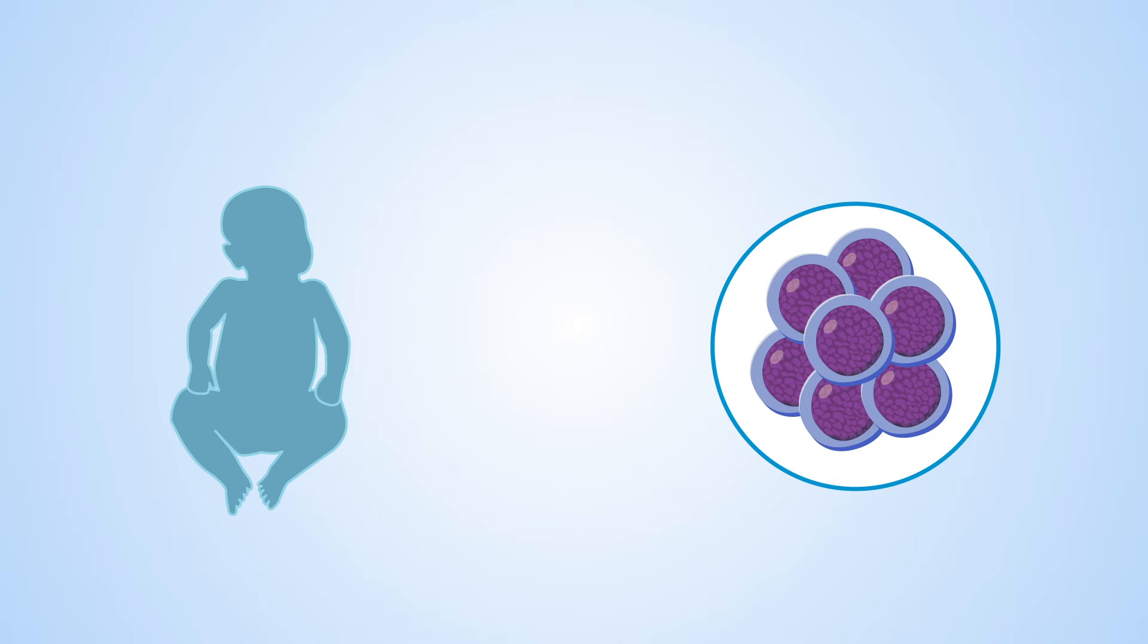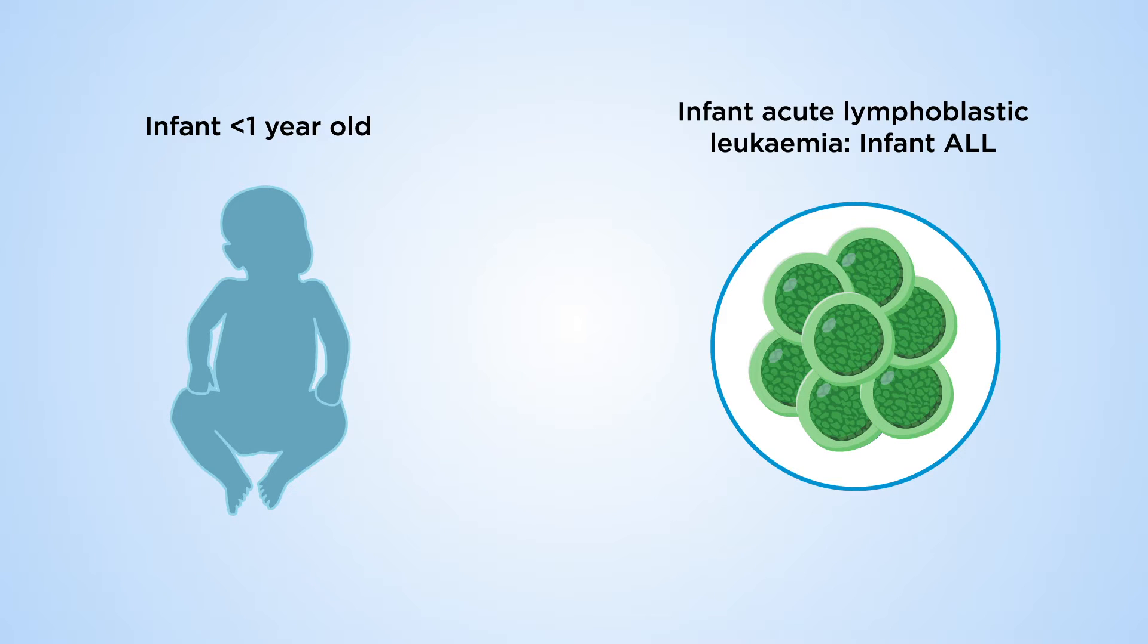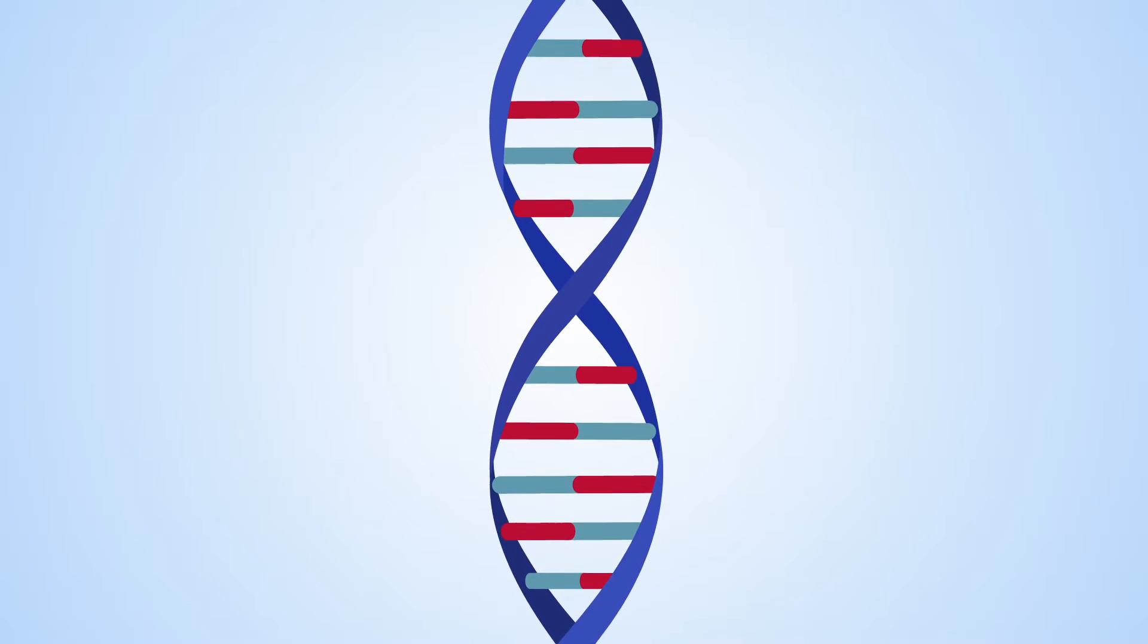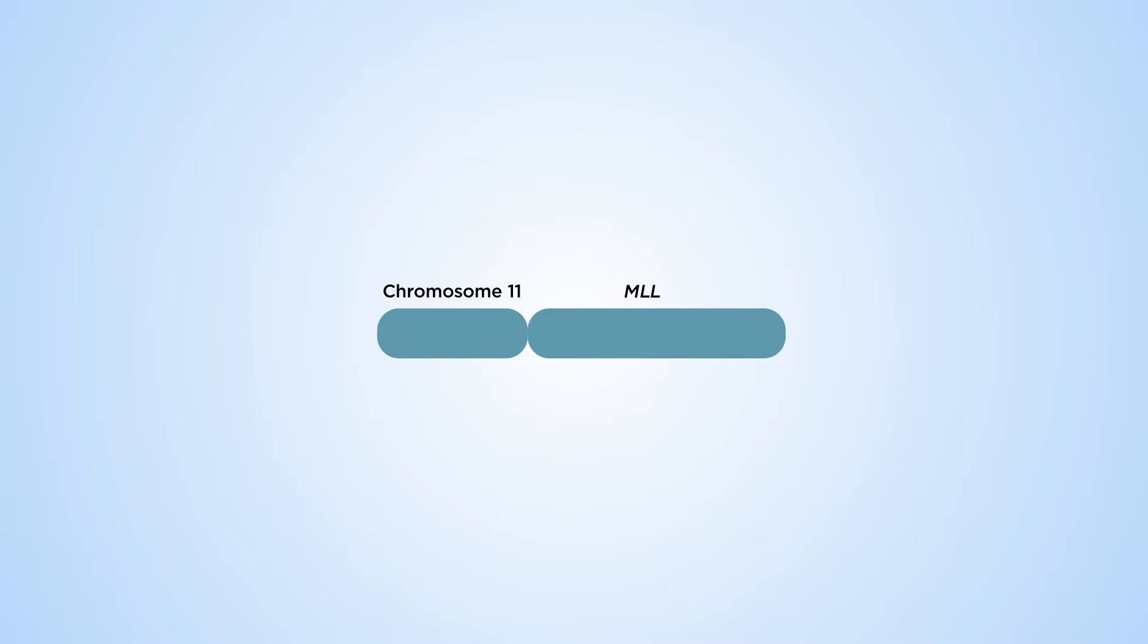Over half of infant leukemia affects the lymphoblasts. This is known as infant acute lymphoblastic leukemia, or infant ALL. The most common genetic drivers of ALL in infants under a year old are rearrangements in the mixed-lineage leukemia gene, or MLLR.